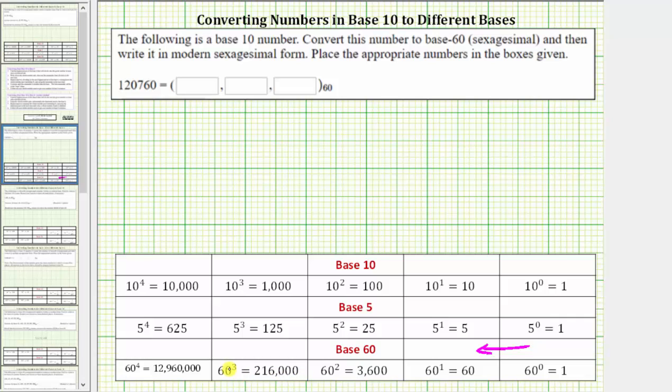When converting a number in base 10 to a new base, the first step is to determine the highest power of the new base that will divide into the number at least once.